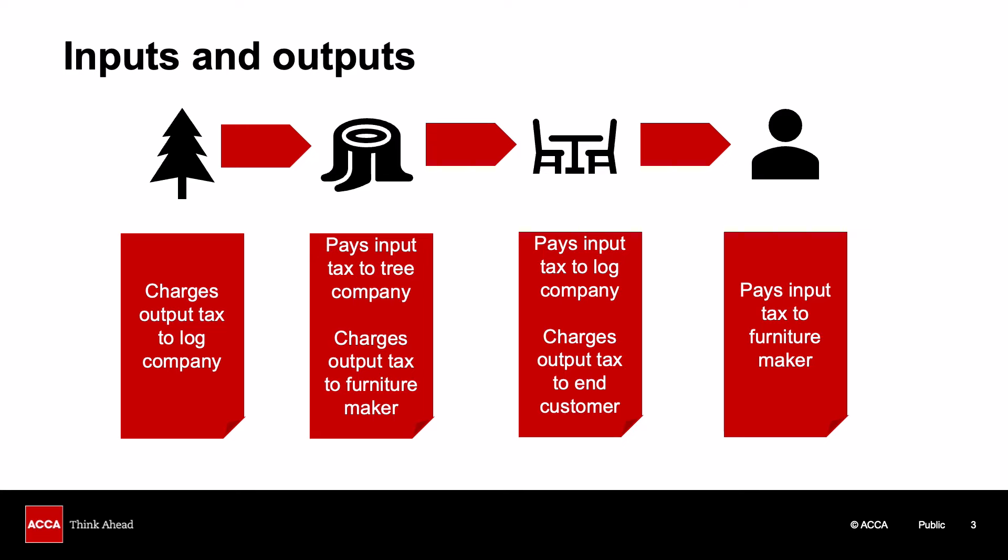Input VAT can be claimed back from HMRC as long as we're making taxable supplies — not exempt supplies. The word 'supply' is a very specific VAT term; it could be goods or a service, it could be a sale or rental to someone. If a business is not registered for VAT, then there is no VAT to be added on to anything. If we are registered for VAT, we're collecting that VAT on behalf of HMRC. All these businesses in the supply chain are collecting VAT and handing it over to HMRC, working out a balance of the input tax they've suffered netted off against output tax collected from customers in a normally quarterly period.